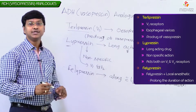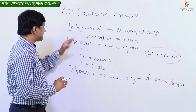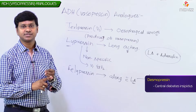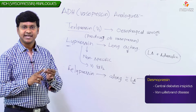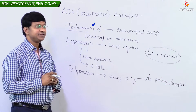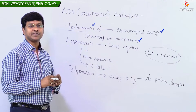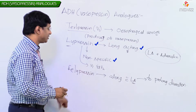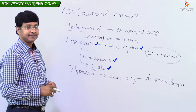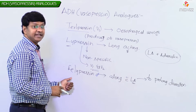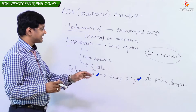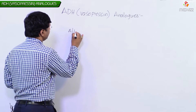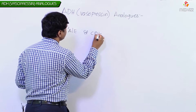To summarize the vasopressin analogues: Desmopressin is used in the treatment of central diabetes insipidus, von Willebrand disease, and Haemophilia. Terlipressin is a prodrug of vasopressin used in the treatment of esophageal varices. Lypressin is long-acting with non-selective action on both V1 and V2 receptors. Felipressin is used along with local anaesthetics to prolong their duration of action. Now let us discuss some adverse effects and contraindications of these drugs.